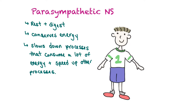Our parasympathetic nervous system is our rest-and-digest response. Its job is to conserve energy — it slows down processes that consume a lot of energy and speeds up the processes we undergo during daily life, such as digestion and bladder contraction. These functions are activated when our parasympathetic nervous system is engaged.